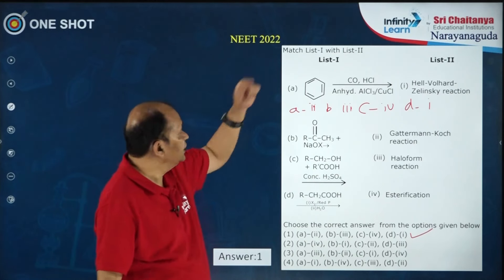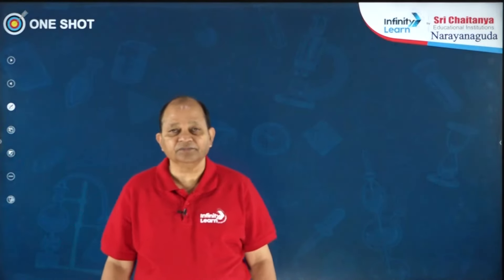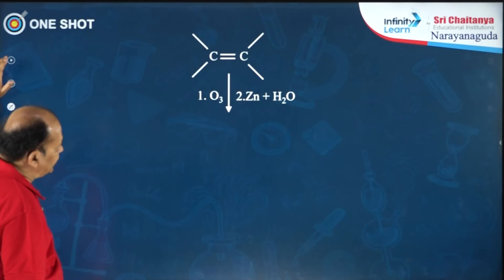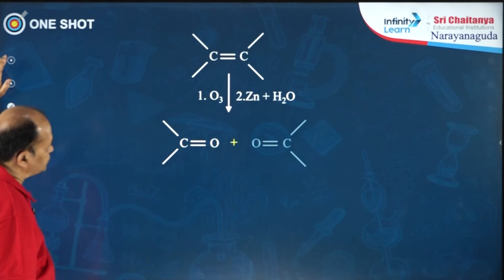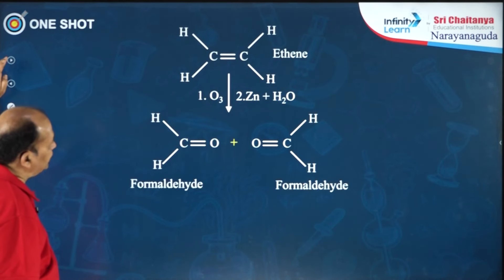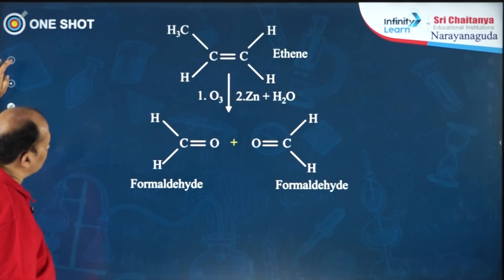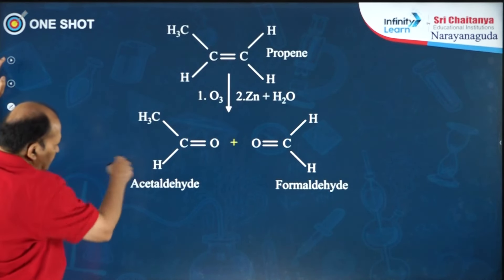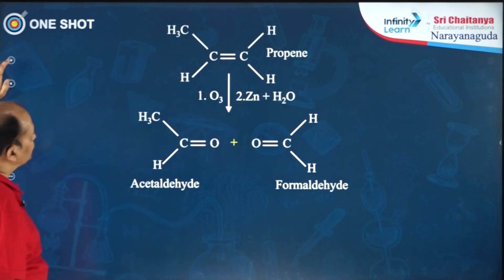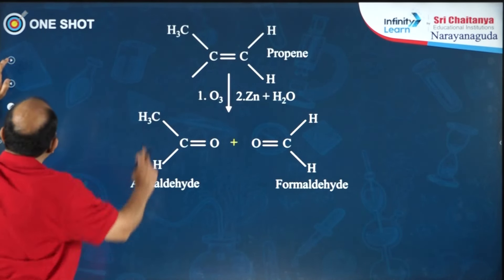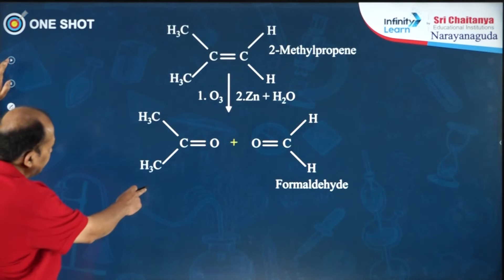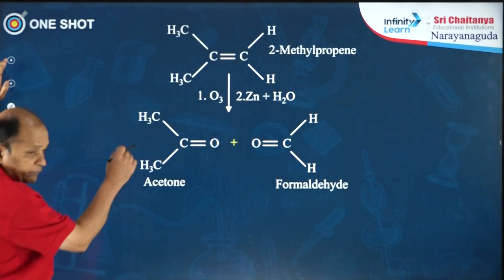The next very important and interesting reaction is ozonolysis. If you take an alkene and treat with ozone, you get an ozonide. The ozonide on subsequent hydrolysis gives two carbonyl compounds. For ethylene, the product is formaldehyde. For propene, one product is acetaldehyde and another is formaldehyde. For 2-methylpropene (where hydrogen is substituted with a methyl group), you get acetone and formaldehyde. This is a very important reaction.